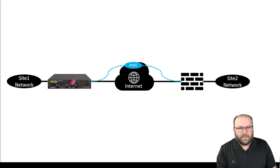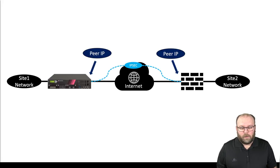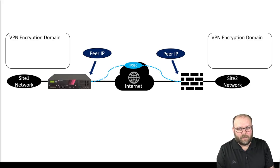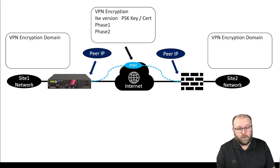The first setting we need to figure out is the peer IP. The tunnel needs to be built between one or more locations, and that's why you need a peer IP address so you know what to connect to. This can be an IP address or a DNS name. The second value we need is what traffic is supposed to go within the VPN — this is called the VPN encryption domain, the specific traffic you want to send via the site-to-site or IPsec tunnel. Since the IPsec tunnel is encrypted, we also need to figure out what sort of encryption parameters we're going to use.